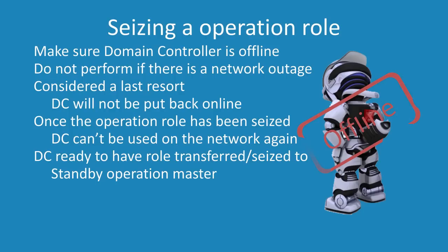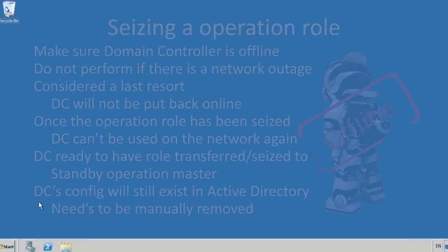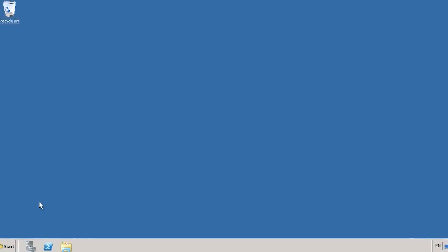Once you have seized the operational master role from the failed domain controller, the configuration for that domain controller will still exist in the Active Directory database. Since the domain controller will not be used on the network again, to complete the process you should also remove the configuration information of the domain controller from Active Directory. I will now change to my Windows Server 2008 domain controller to demonstrate how to seize an operational master role from a domain controller and also how to clean up the Active Directory database after the operational master role has been seized.